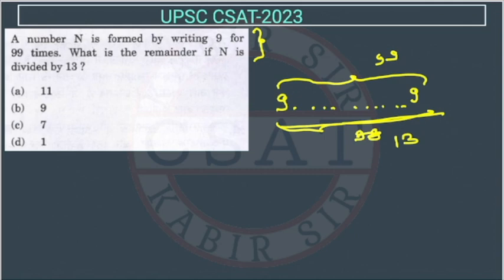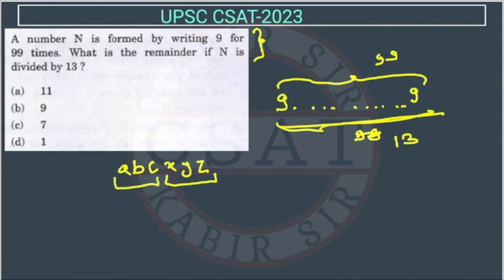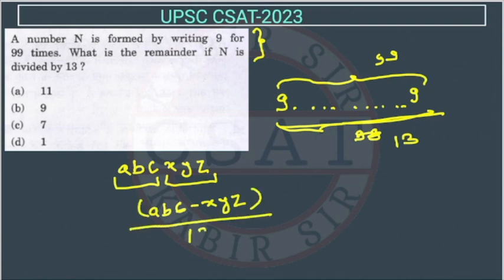The concept of divisibility by 13 is: suppose there is a number with digits A B C X Y Z. We make pairs of 3 digits each and then subtract them — so A B C minus X Y Z. If the result is divisible by 13, then the original number is divisible by 13. We will use this same concept here.